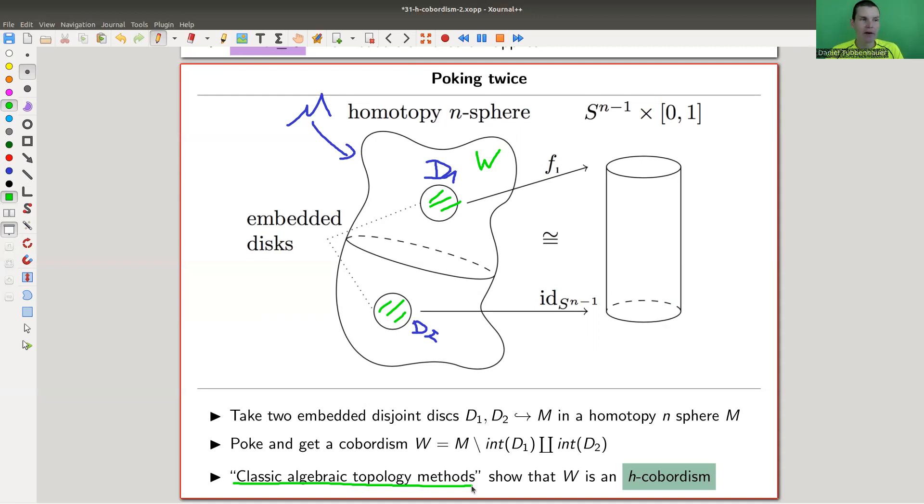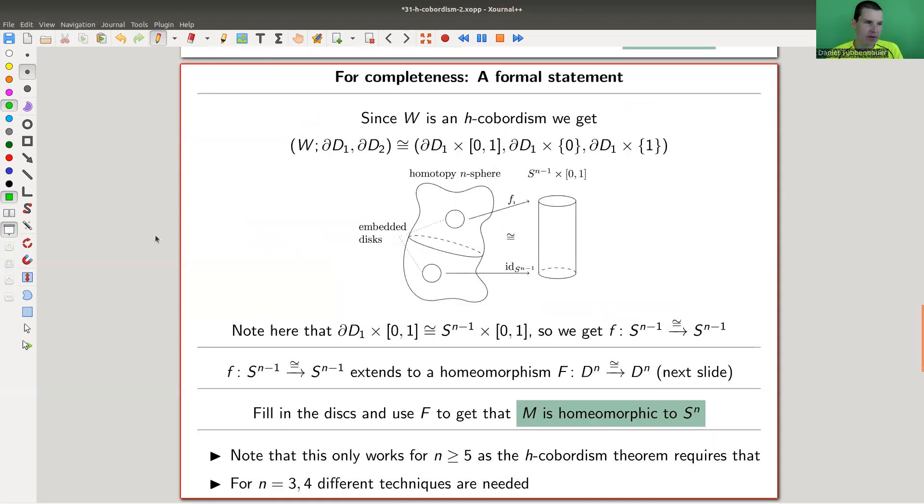And that's something that's true, because really the main need is the H-cobordism theorem, which comes in here. So you poke it twice and you can show because it's a homotopy n-sphere that this piece W is an H-cobordism. And that implies a lot. And essentially you're done at that point, up to piecing things together. So here's our little picture again.